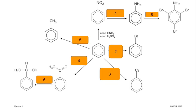Number two: benzene to bromobenzene — you react it with bromine but it needs to be in the presence of a catalyst. AlBr3 or FeBr3 are the ones to go for. You can say iron, but that needs to form the catalyst by reacting with the bromine first. Number three: very similar, but this time it's for chlorine — any of those catalysts would do.